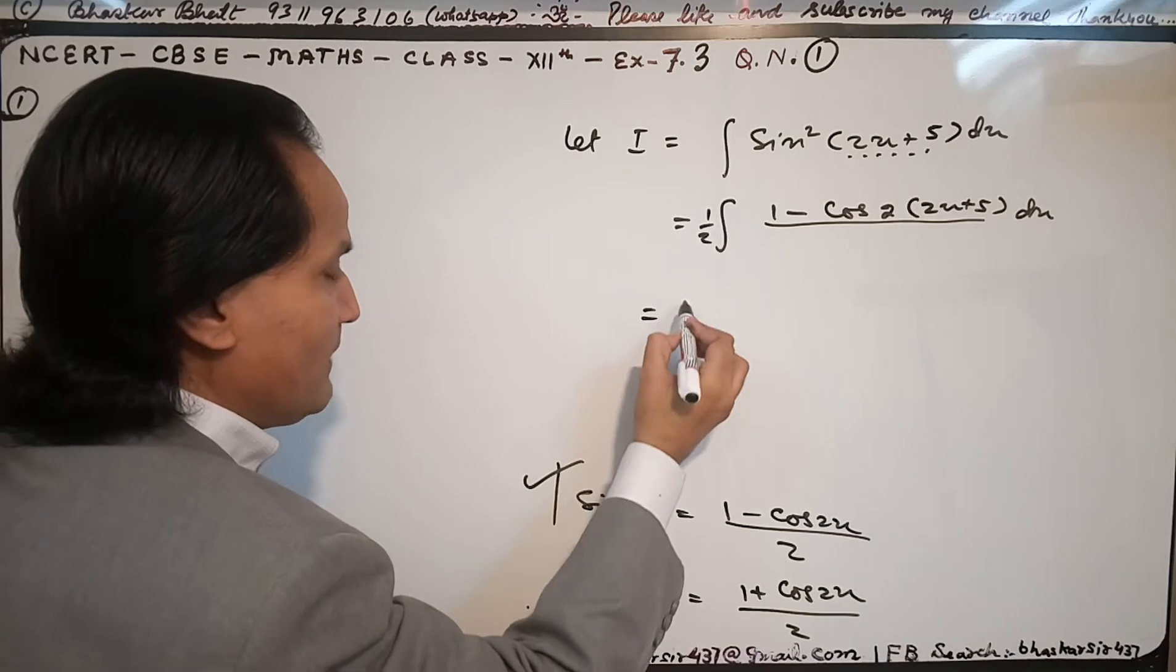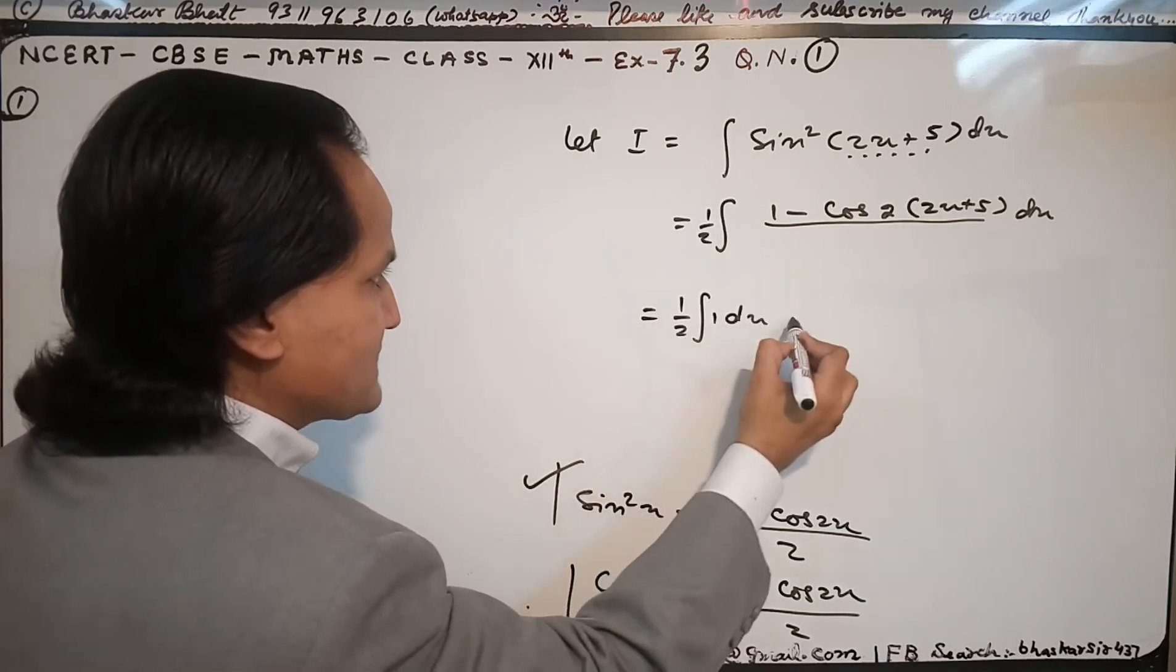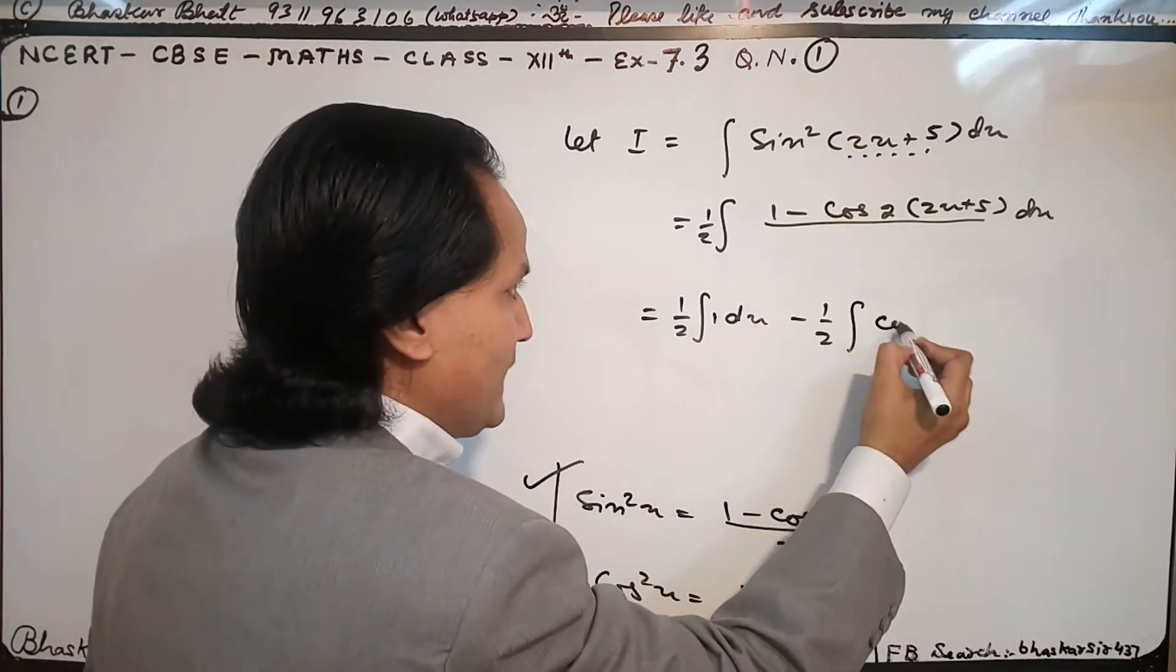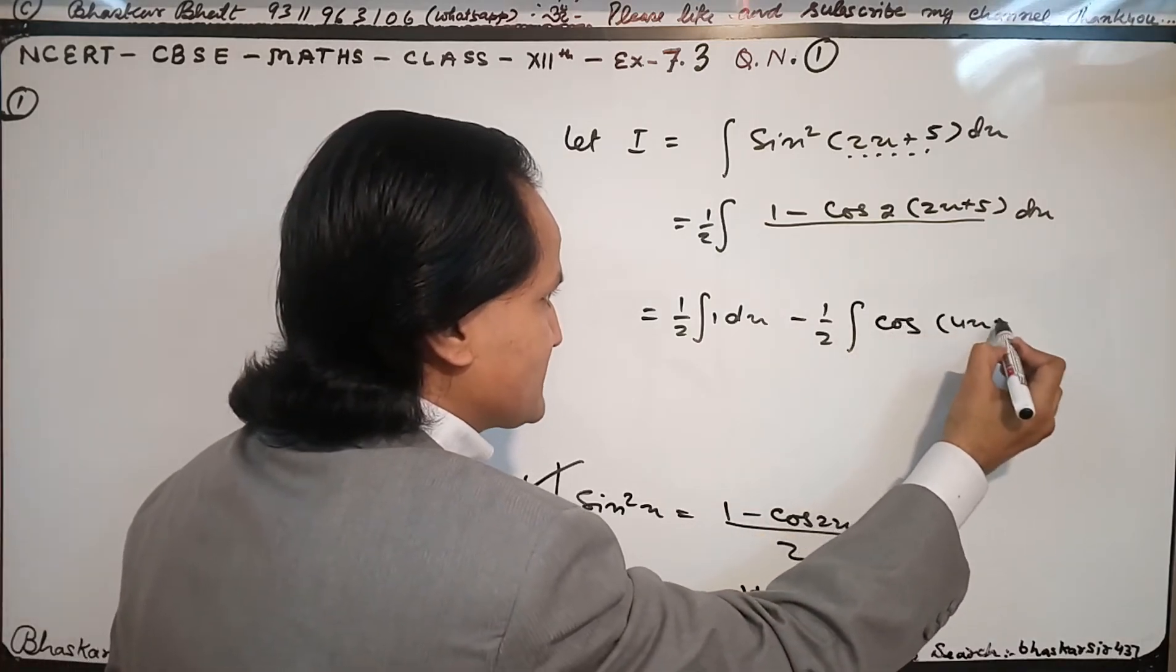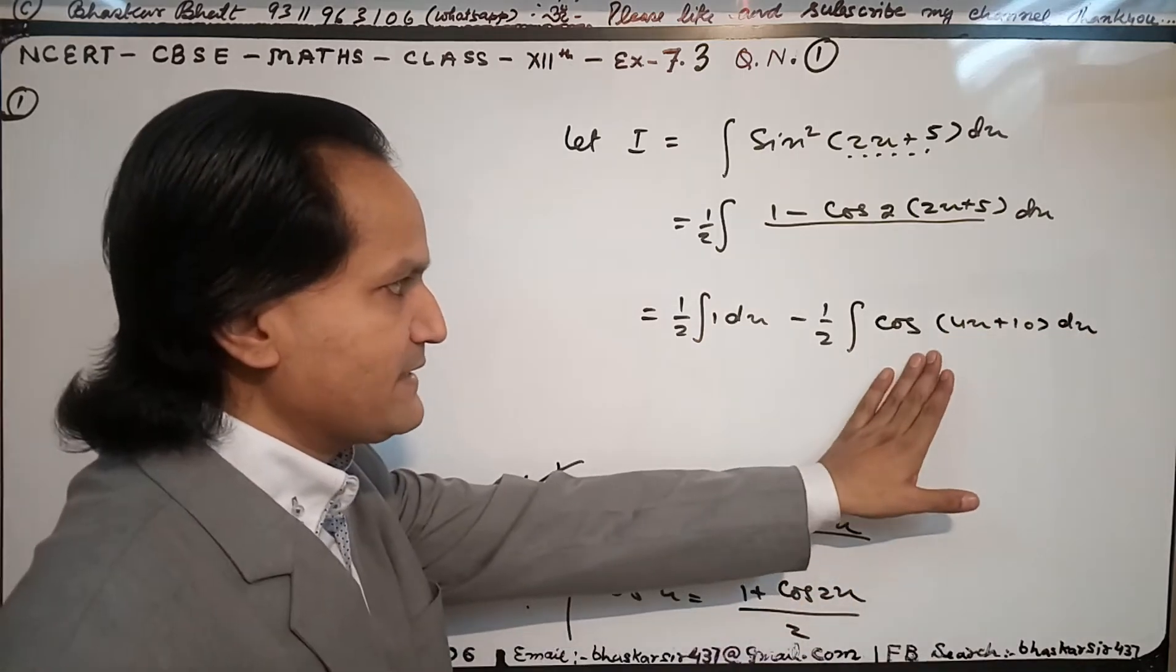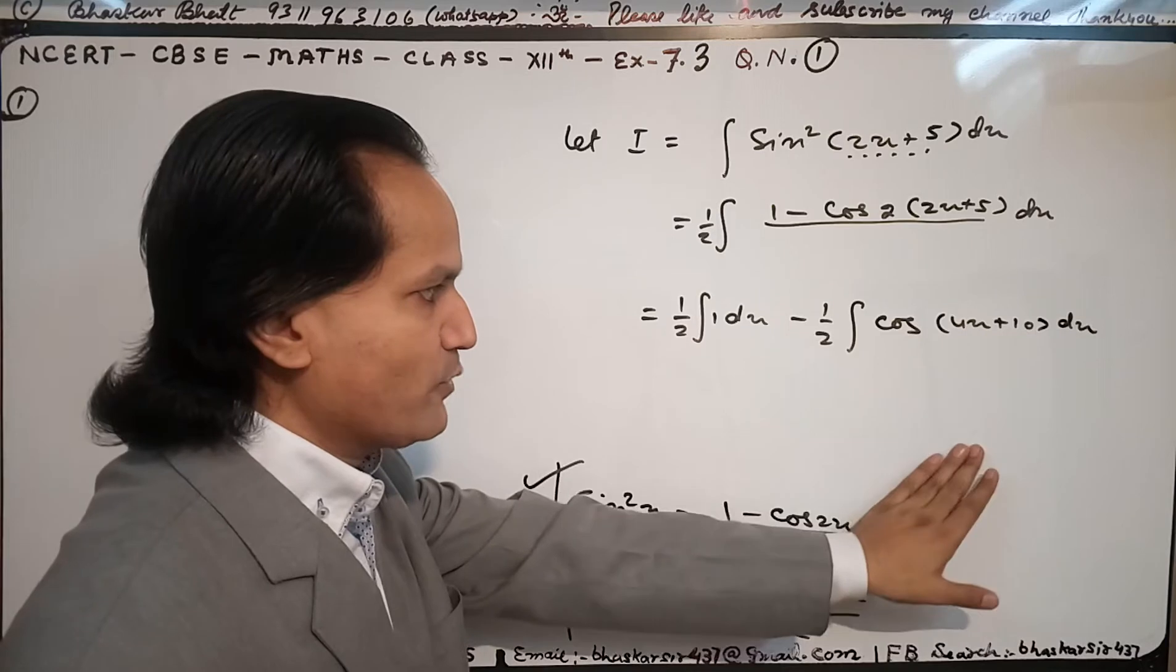We have (1/2)∫1 dx minus (1/2)∫cos(4x + 10) dx. If you understand directly, that's better. Put 4 in the denominator. If you don't understand directly, then first put 4x + 10 equal to t.